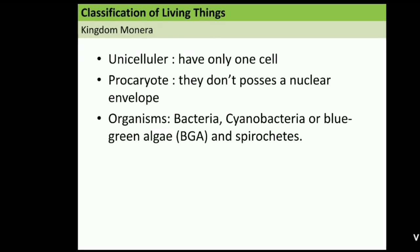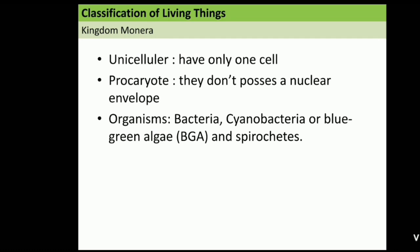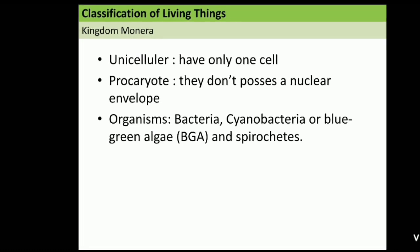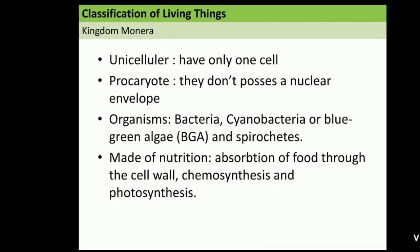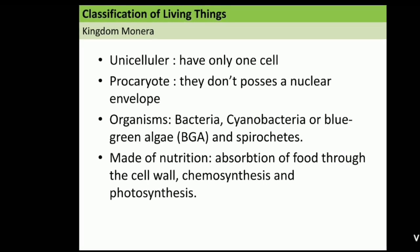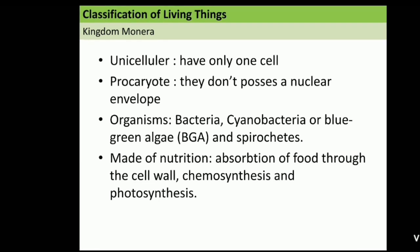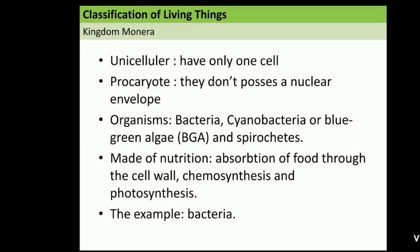Then, kingdom Monera, the organisms are bacteria, cyanobacteria, or blue-green alga, and spirochetes. And they meet their nutrition by absorption of food through the cell wall, chemosynthesis, and photosynthesis. And the example is bacteria.